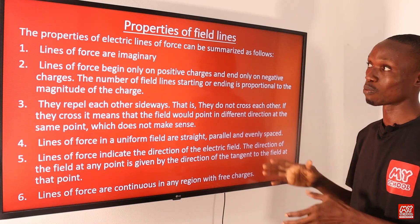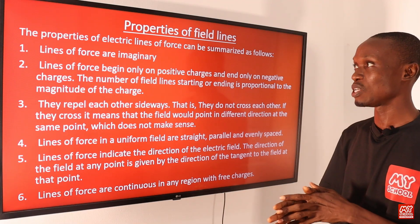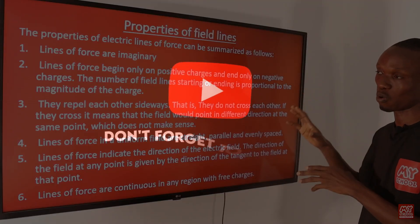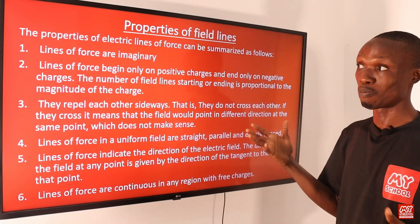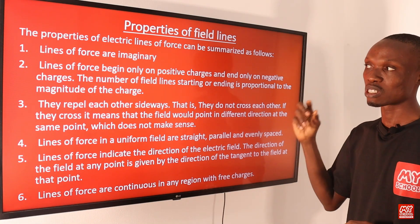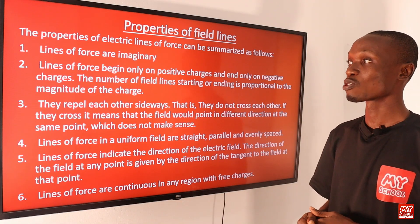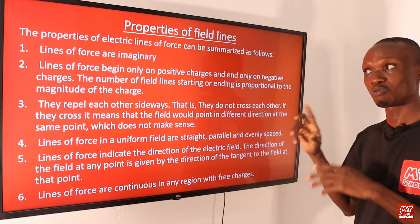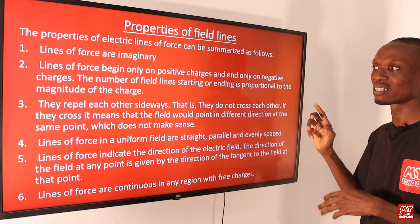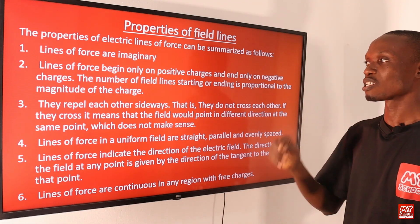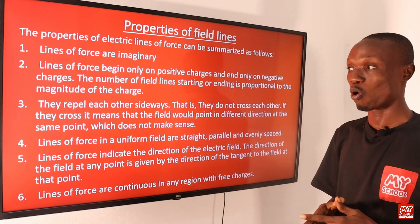On the next slide we are discussing the properties of electric lines of force. First, lines of force are imaginary — they are not actually real, just a figment of imagination. Second, lines of force begin only on positive charges and end only on negative charges. The number of field lines starting or ending is proportional to the magnitude of the charge.